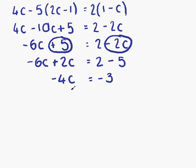What we can do is change this to positive by multiplying by minus 1. Minus 1 times minus 4c is 4c. And multiplying by minus 1 on this side gives us 3. 4c equals 3. So, c equals 3 divided by 4, or 3 quarters. And that's our final answer.